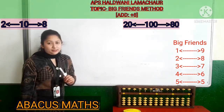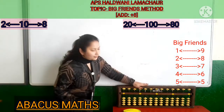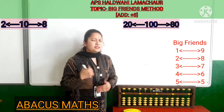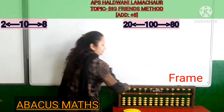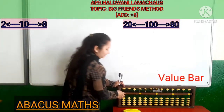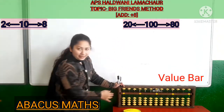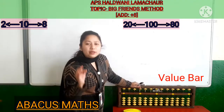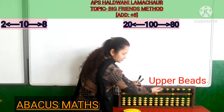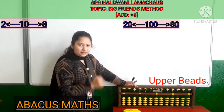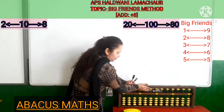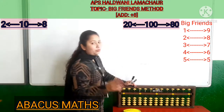Before starting the sum, let's revise the parts of the Abacus. This is the upper part of the Abacus and it is called the frame. This is the middle line of the Abacus and it is called the value bar. These upper ones are called upper weights and the lower ones are called lower weights.